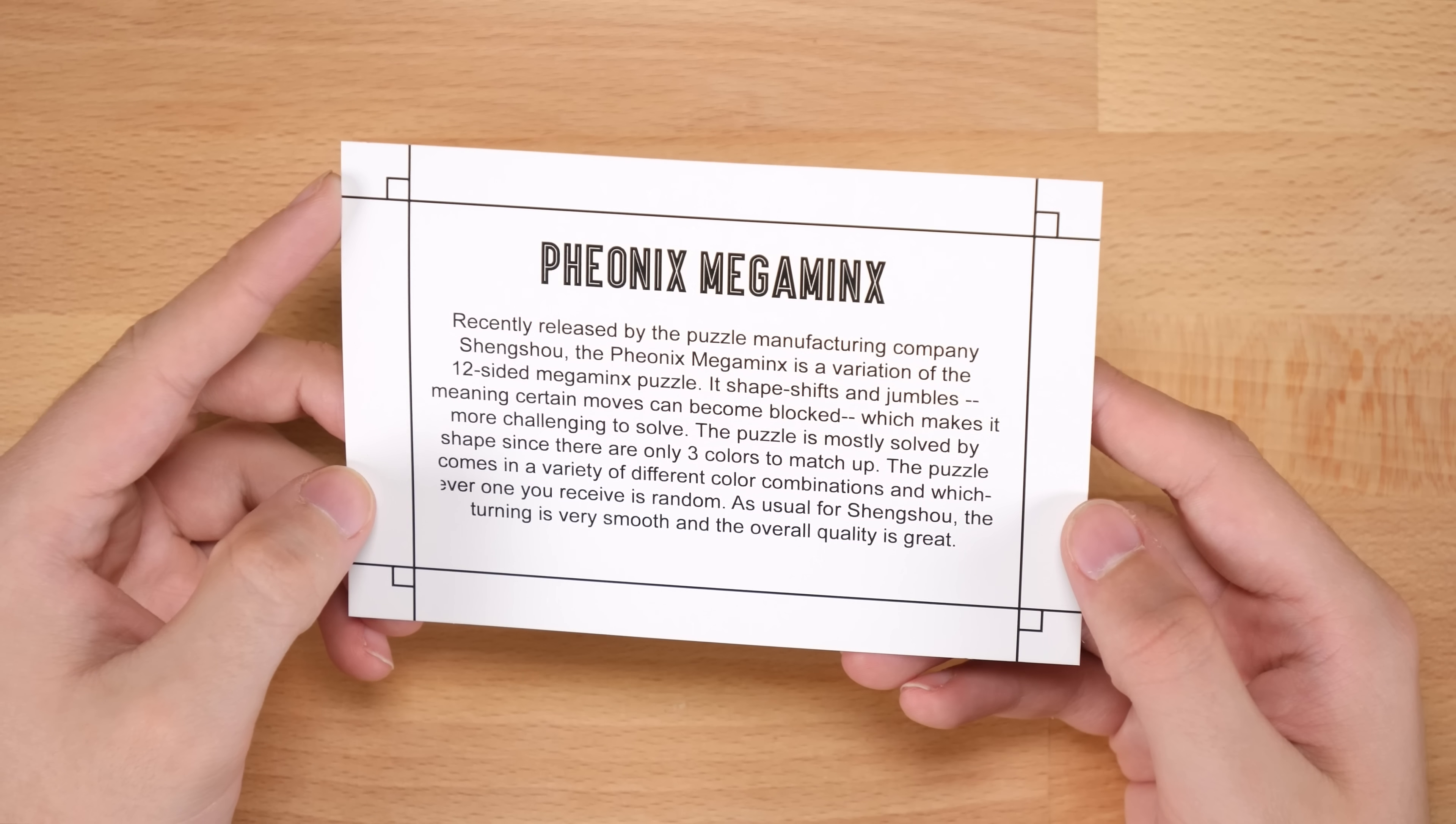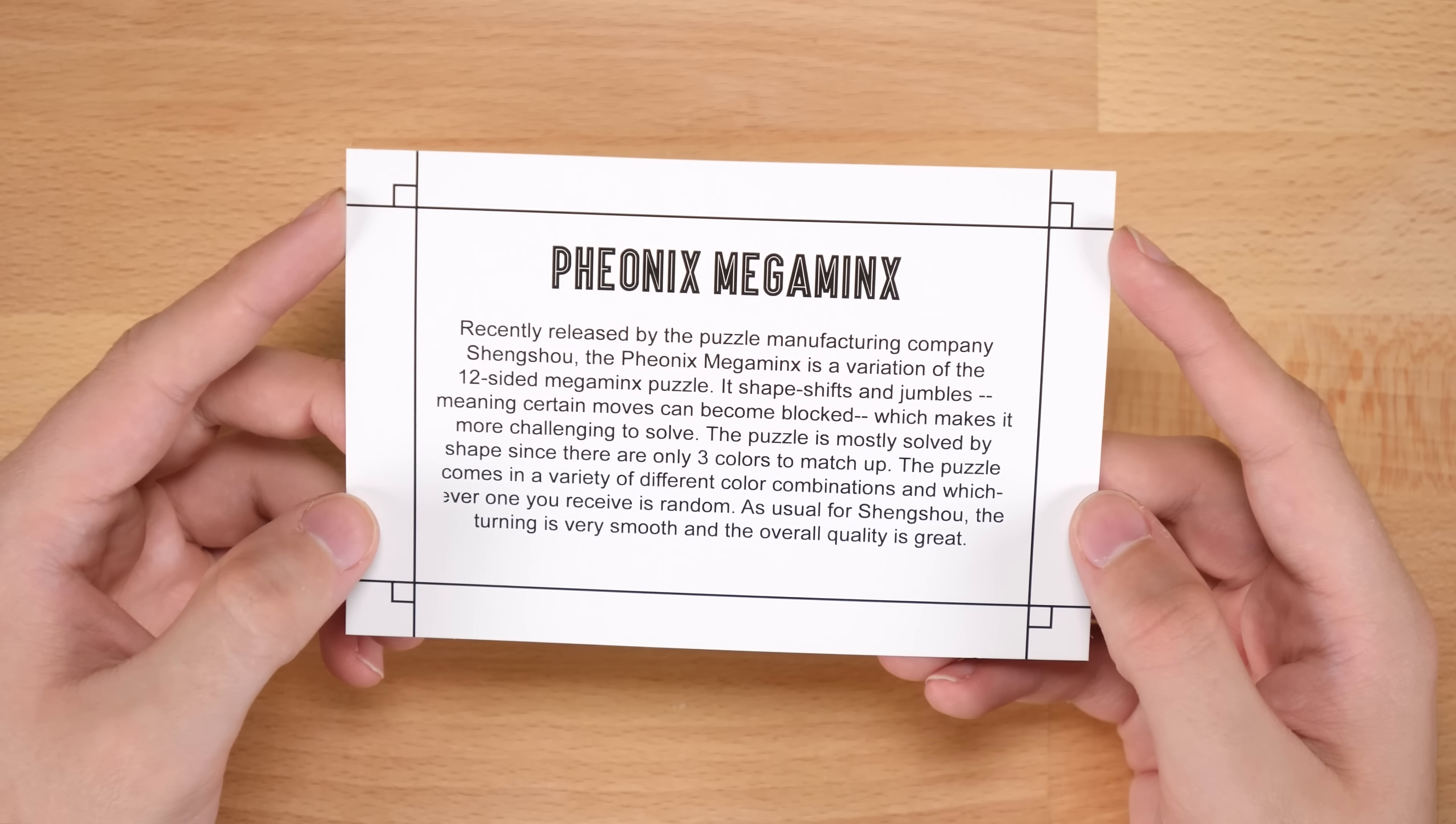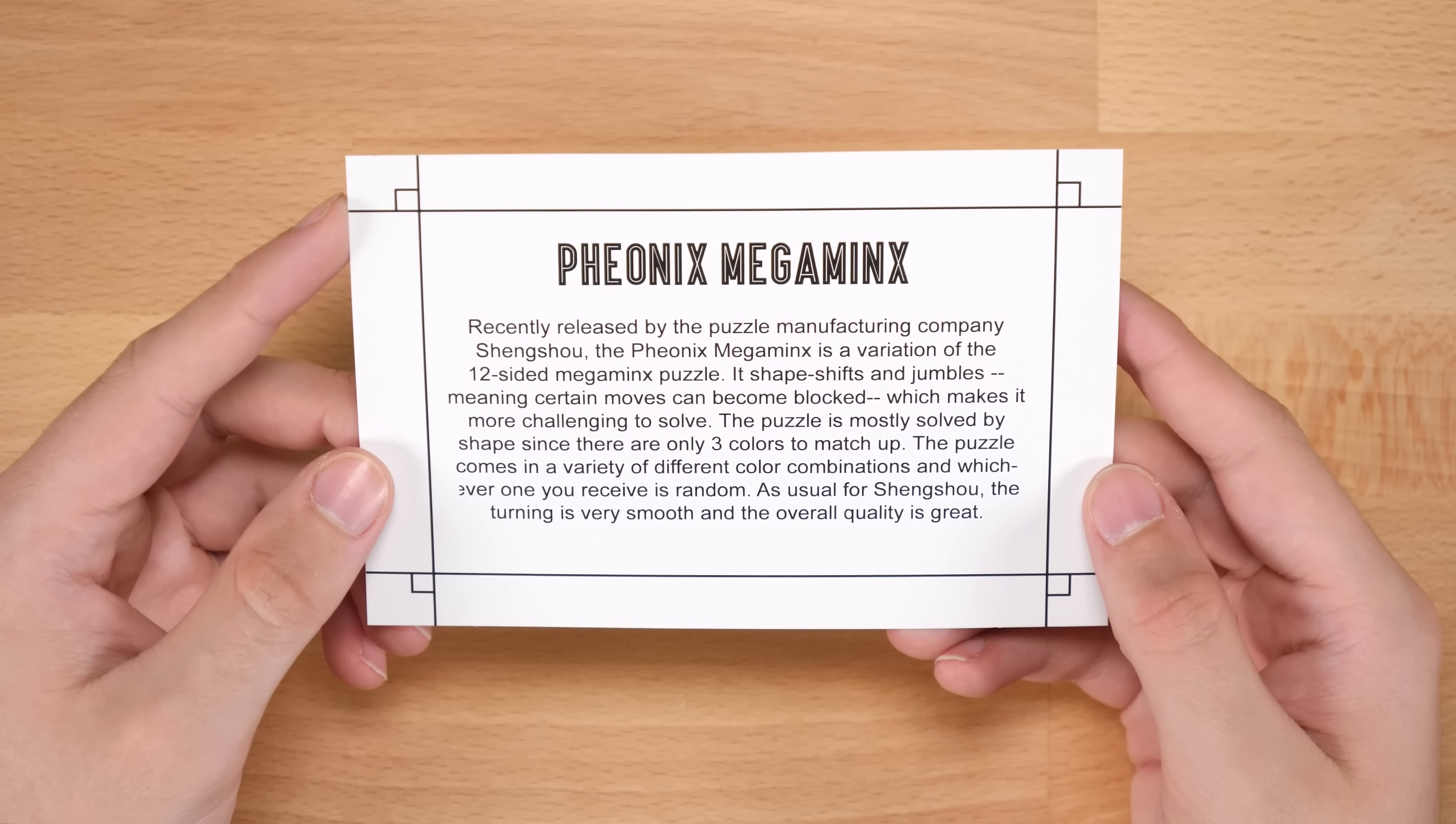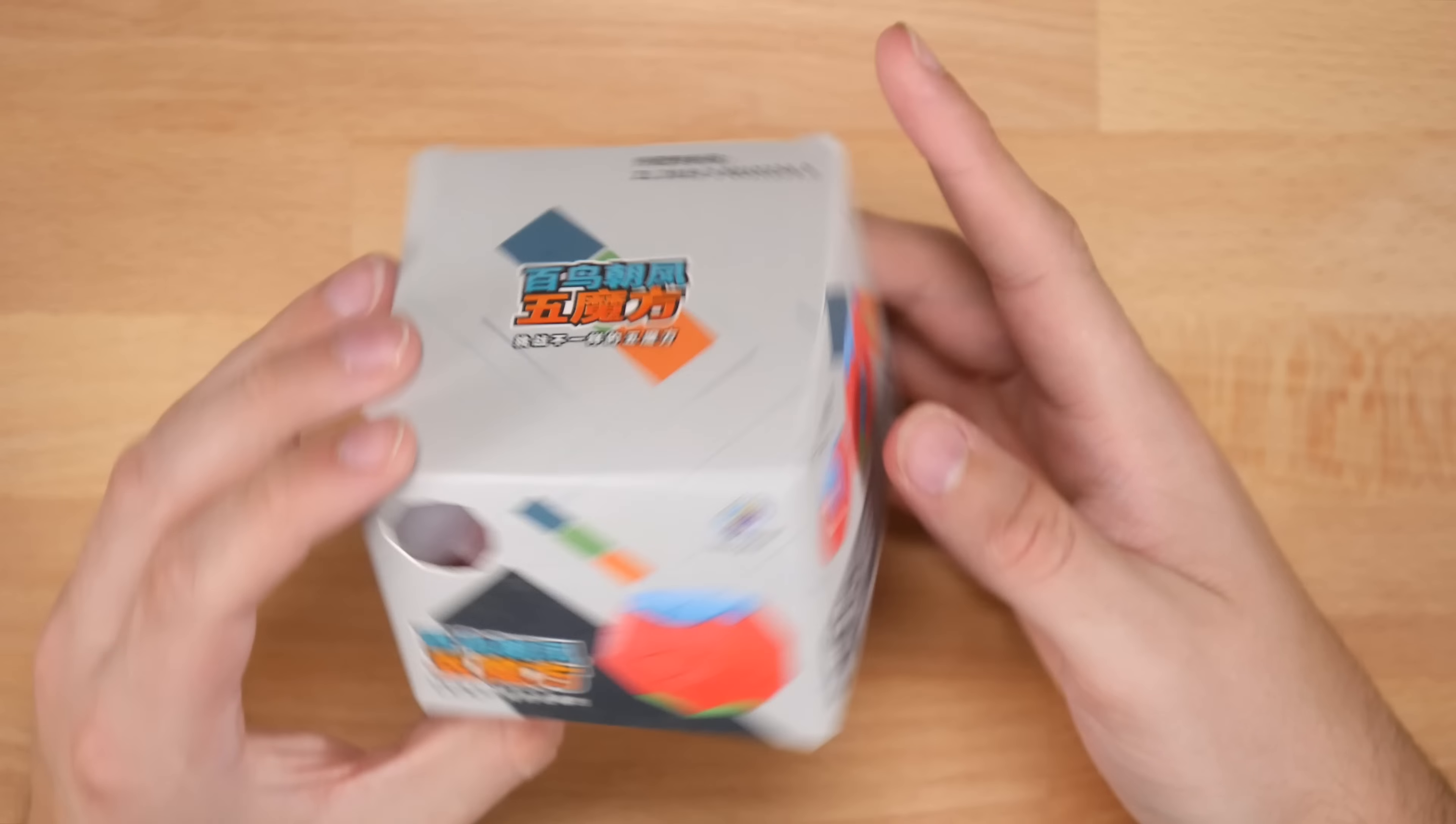Recently released by the puzzle manufacturing company Shengshou, the Phoenix Megaminx is a variation of the 12-sided megaminx puzzle. It shapeshifts and jumbles, meaning certain moves can become blocked, which makes it more challenging to solve. The puzzle is mostly solved by shape since there are only three colors to match up. The puzzle comes in a variety of different color combinations and whichever one you receive is random. As usual for Shengshou, the turning is very smooth and the overall quality is great.